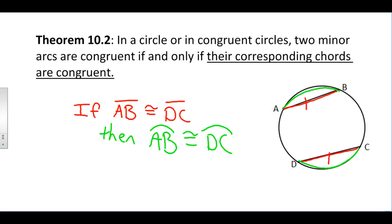This part in here that says if and only if is saying that it works both directions as well. So if arc AB and arc DC were congruent, we would know that chord AB and chord DC would also have to be congruent to each other.